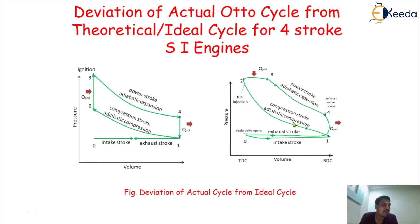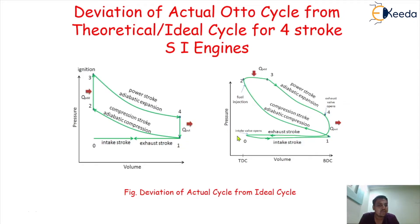Why does this happen in the actual engine? There are different reasons, and these come under the deviation of the actual Otto cycle from the theoretical or ideal cycle. We are going to understand the different reasons because of which we never get the actual cycle similar to the theoretical ideal or theoretical Otto cycle.